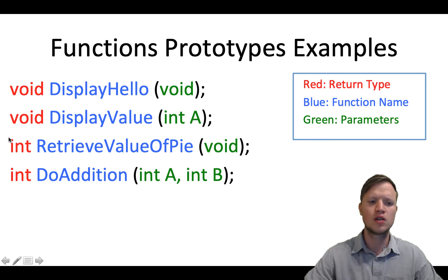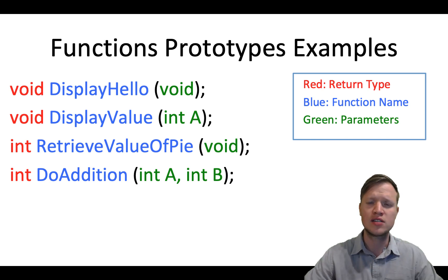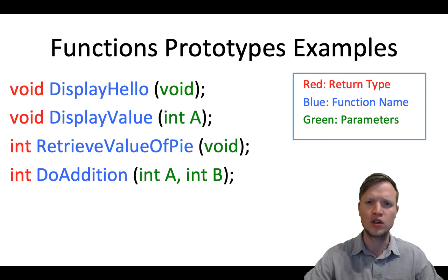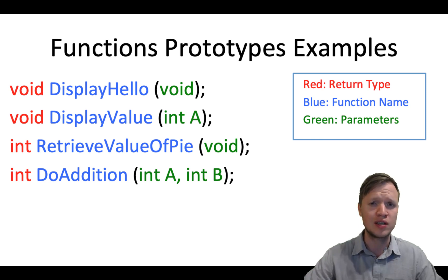Then we have the words in blue — display, allow, display value, etc. — this is our function name. It's important to note that function names follow the same rules as variable names in C programming. Function names must be one word without any spaces. They are case sensitive, so if there's a capital D in display and a capital H in Hello, you need to call it in the exact same manner with capital letters at the correct places.